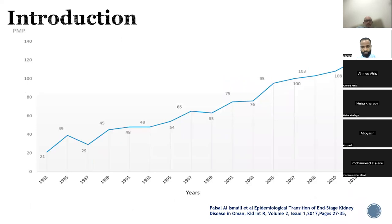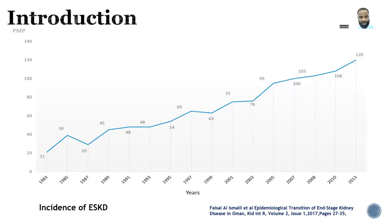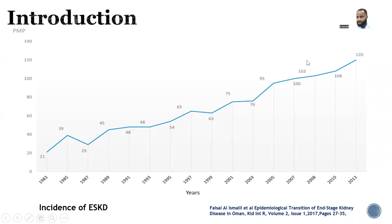I also found an epidemiological pattern of end-stage kidney disease in Oman. From this picture we can see that from 1983 there has been a marked increase in the incidence of patients diagnosed with end-stage kidney disease — from about 21 per million population in 1983, gradually increasing to about 120 per million as of 2013 when this was reported.